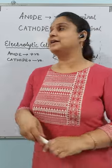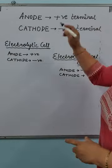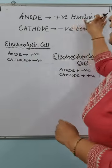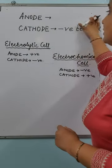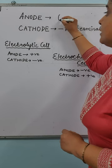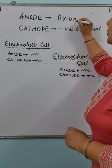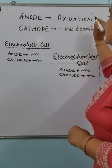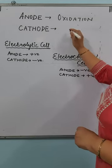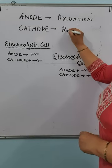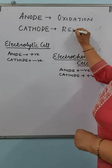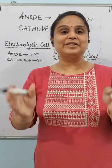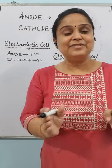So remember from today, anode is not positive or negative. Anode is that terminal where oxidation takes place. And cathode is where there is reduction. So don't connect the anode and cathode terms with positive and negative.